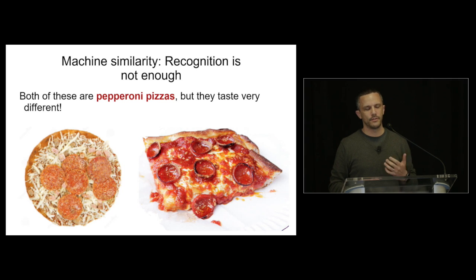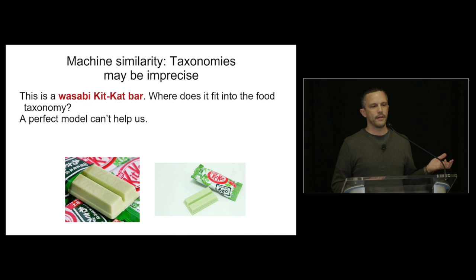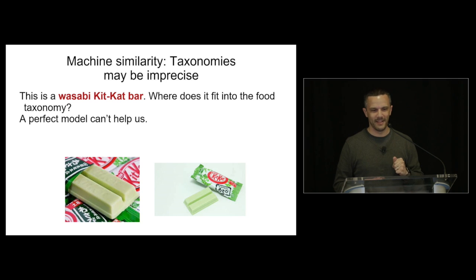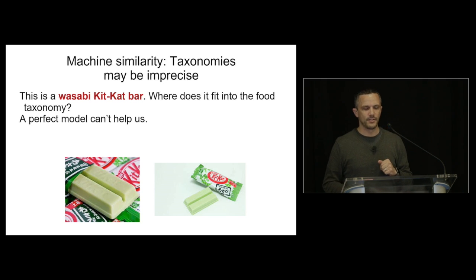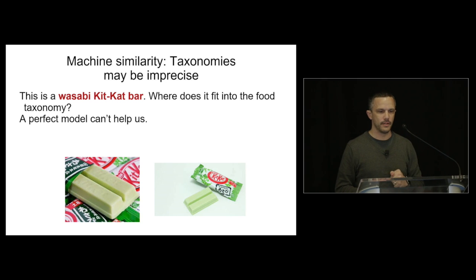Do these taste similar? Well, sort of, but one is frozen and you wouldn't want to bite into it. Here's something that might superficially look like guacamole — the visual features are very subtle. And what category is this? Is this a candy? Does it count as KitKat? That would be quite a surprise. Sometimes these things defy predefined categories and we need a mechanism to go beyond the softmax output layer of a deep conv net.